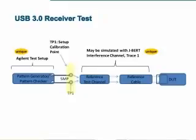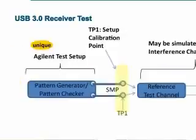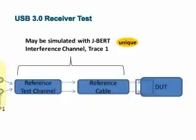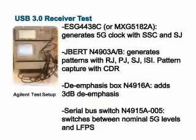Another emerging application for Jaybird is USB SuperSpeed receiver testing. A pattern generator is needed that allows generating patterns and stress conditions, and you also need to emulate a reference test channel. Jaybird, when used with an external clock source, allows you to emulate all the stress conditions and patterns required to test USB 3 receivers.